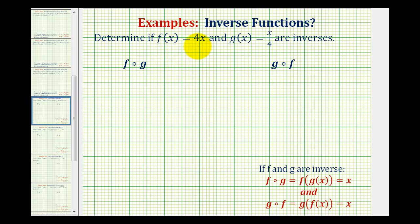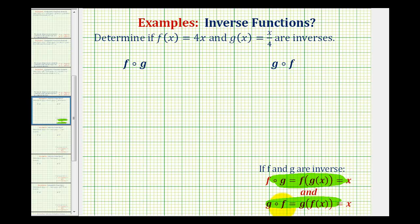We want to determine if f of x equals four x and g of x equals x divided by four are inverses. Remember, inverse functions undo each other. Since this function multiplies the input by four and this function divides the input by four, it would appear that these two functions undo each other. But to show two functions are inverses, we have to show that f of g of x equals x and g of f of x also equals x. So we need to show both of these composite functions are equal to x.